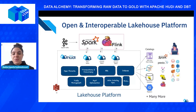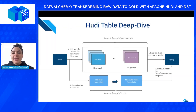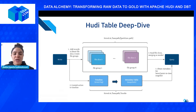Now let's dive into Hudi's file layout and why it's important. A Hudi table consists of file slices. Each slice contains a base file, usually in Parquet format, produced at a certain commit or compaction instant time, along with a set of log files that contain inserts and updates to the base files since the base file was last produced. A group of file slices is known as a file group. When writes come in, the records are written to the file slices, and each record has a key that is mapped to a particular file group.